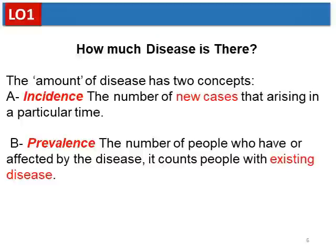Starting with the first objective: How much disease is there? We want to know the extent of a problem or disease in the community, and how we can measure it. To know the amount of disease, there are two essential terms you need to know and differentiate between. The first is incidence and the second is prevalence. Incidence is the number of new cases arising in a given population in a particular time period.